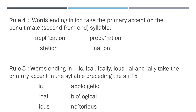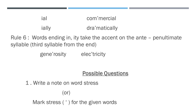The fifth rule is words ending in -ic, -ical, -ically, -ious, -ial, and -ially take the primary accent on the syllable preceding the suffix. Examples: apologetic, biological, notorious, commercial, dramatically.